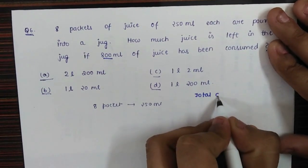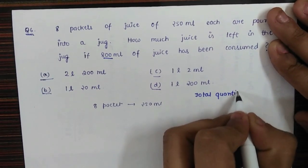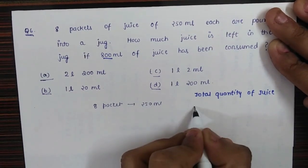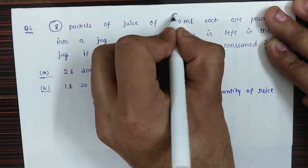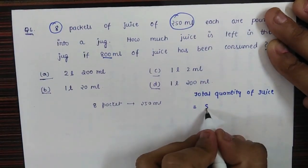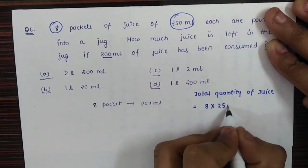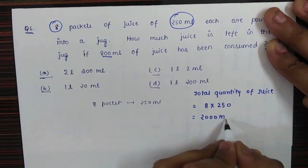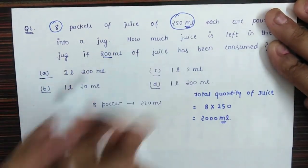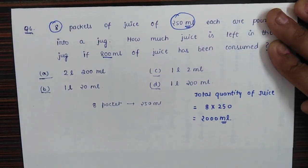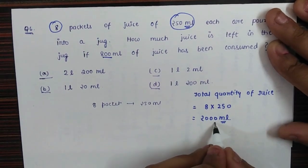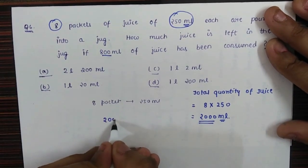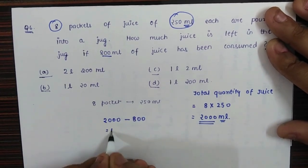To get the total quantity of juice, we have eight packets of 250 ml each, so we simply multiply 8 by 250, which gives us 2000 milliliters. Out of these 2000 milliliters, 800 milliliters have been consumed, so we calculate 2000 minus 800, which gives us 1200 milliliters.